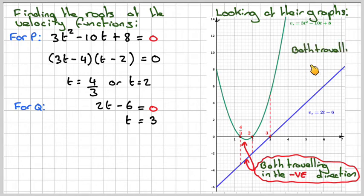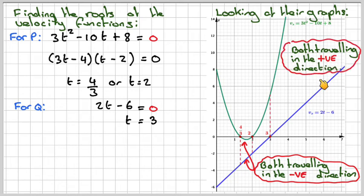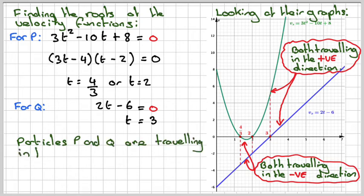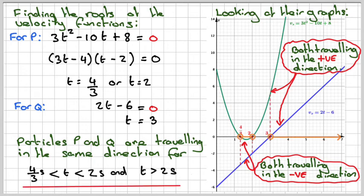And then here, for t greater than 3, they're both traveling in the positive direction. So the range of values, the particles P and Q are traveling in the same direction, being between 4 over 3 and 2, but not equal to, and t is greater than 3.